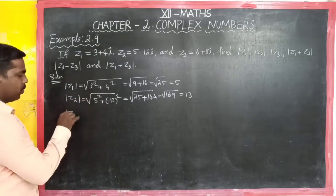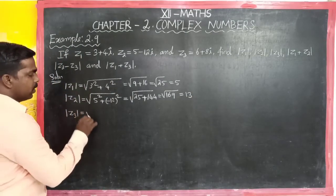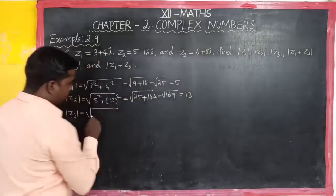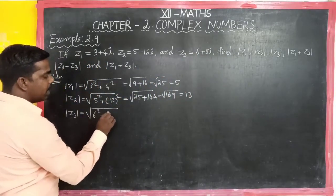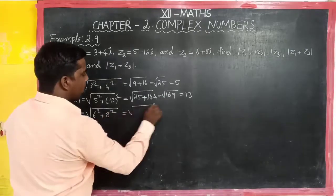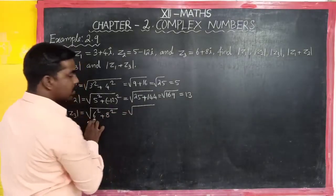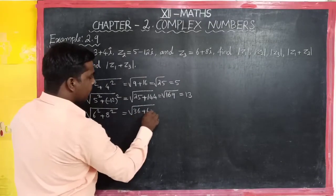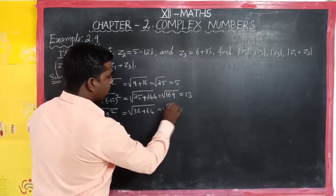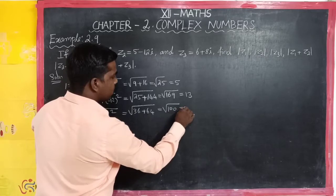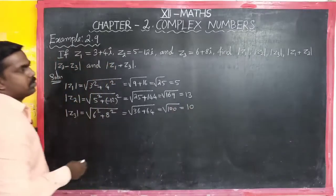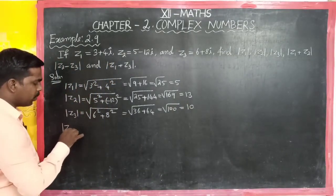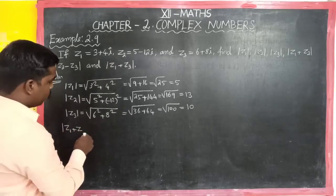Next, modulus of z3 is equal to square root of 6 squared plus 8 squared. Six squared is 36, and 8 squared is 64. So square root of 100, which equals 10.